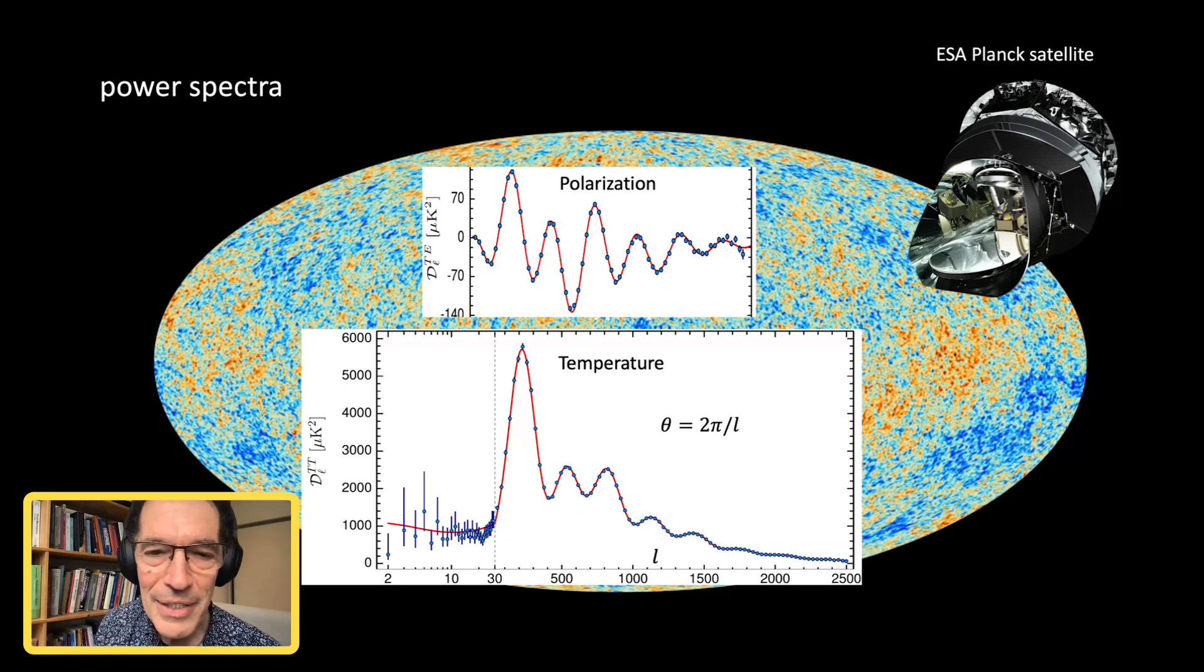Now, the key point is that this is with no free parameters. You fit the free parameters of the cosmology to the bottom curve, and then just predict the top curve. And it fits spectacularly well.